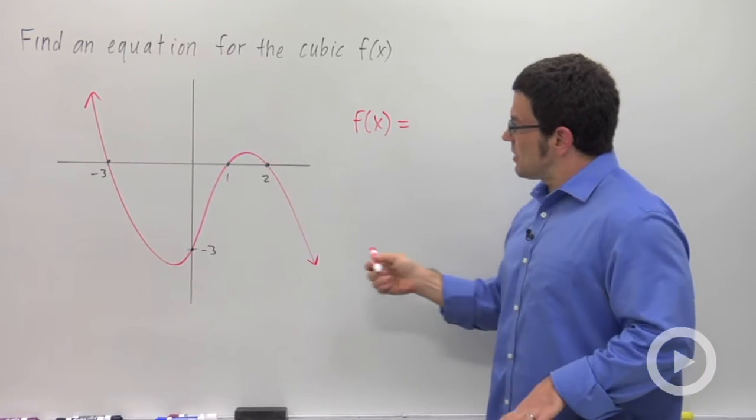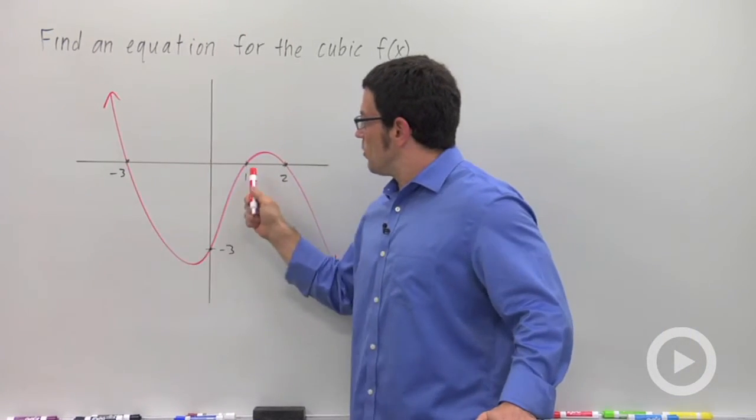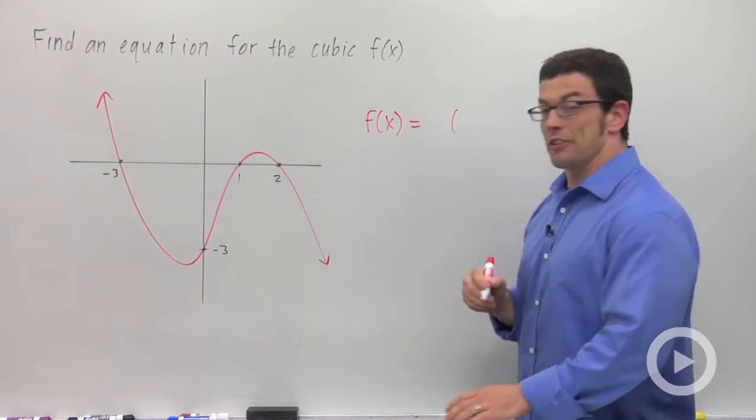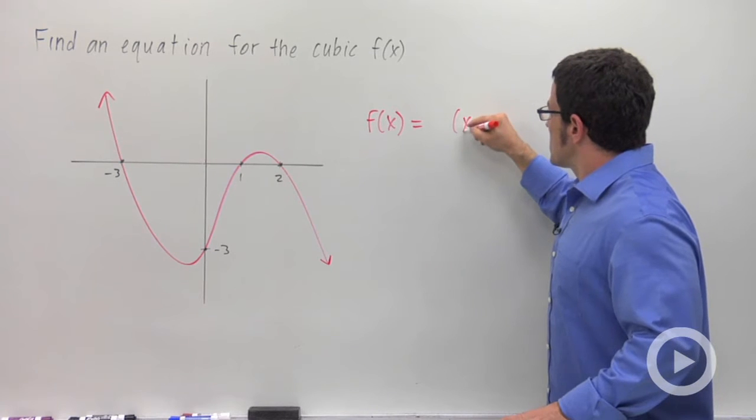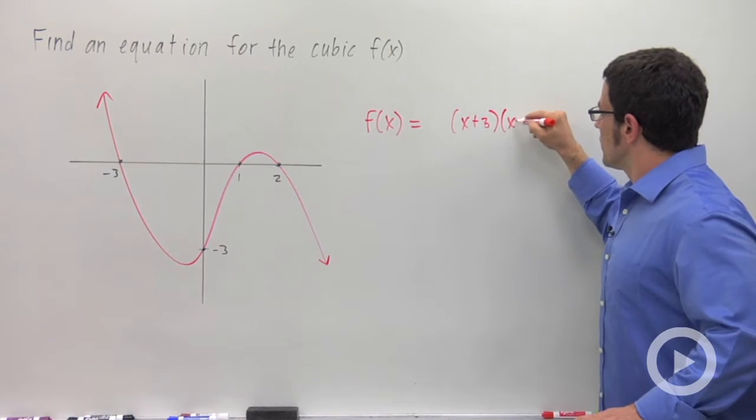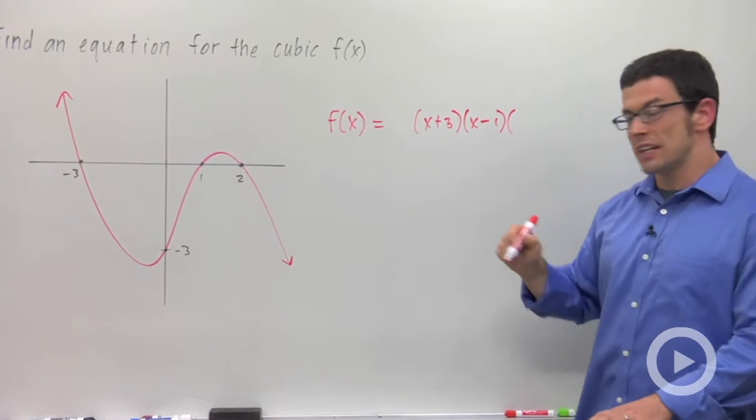Now let me start by observing that the x-intercepts are negative 3, 1, and 2. And remember, x-intercepts give us the factors. Negative 3 gives me x plus 3, 1 gives me x minus 1, and 2 gives me x minus 2.